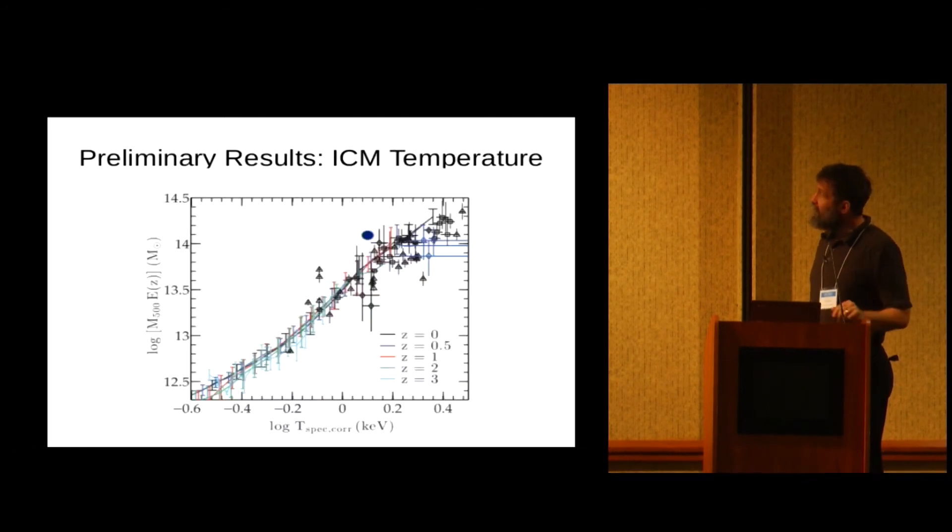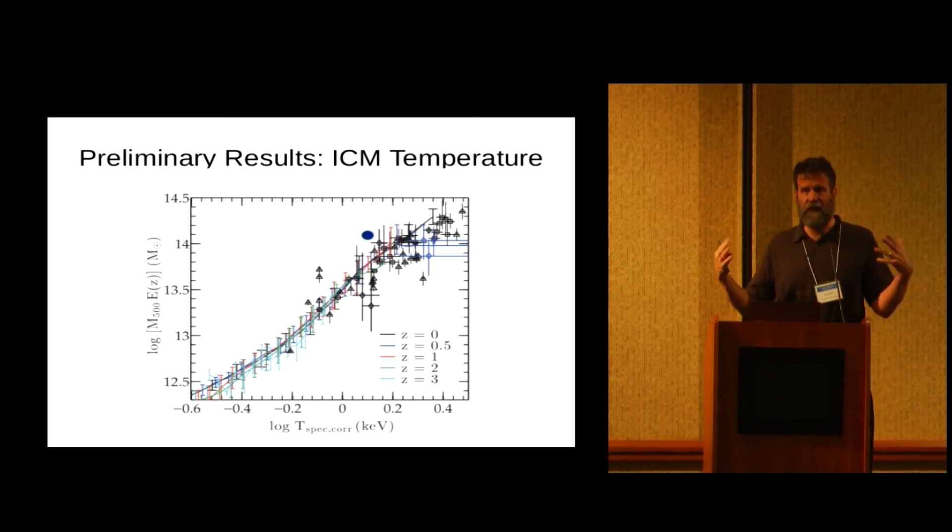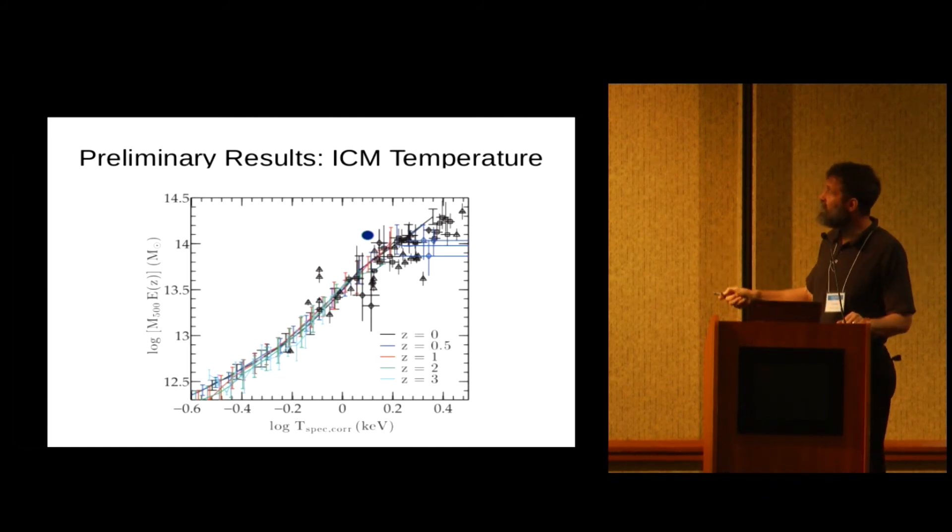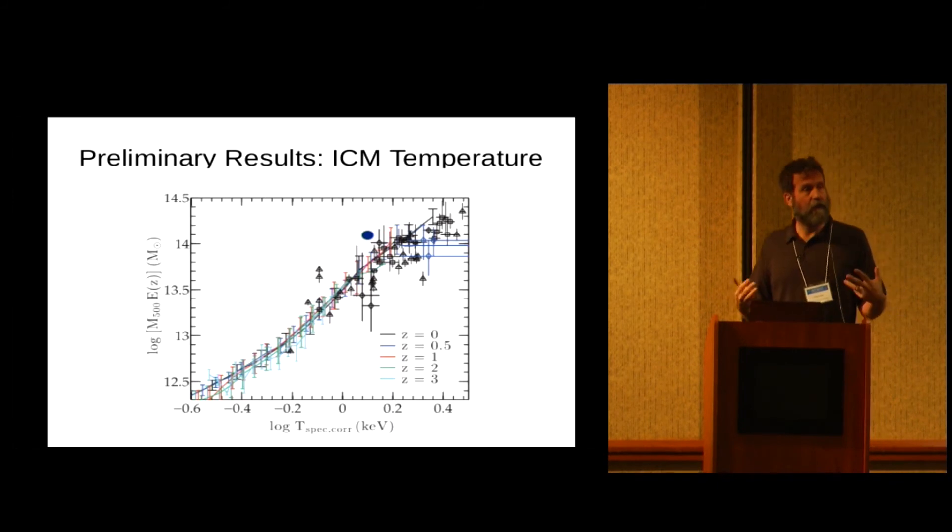We think we're getting the physics right, so just a preliminary result about the physics. We know we can get the galaxies right. We're worried about the intra-cluster medium, the hot gas between the galaxies. So this point here is showing that we get the gas temperature as a function of the mass of the cluster comparable to observational results.